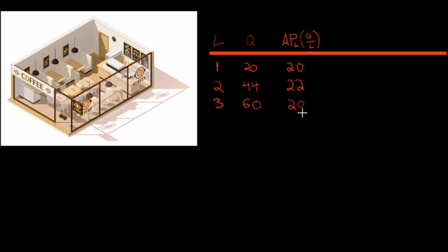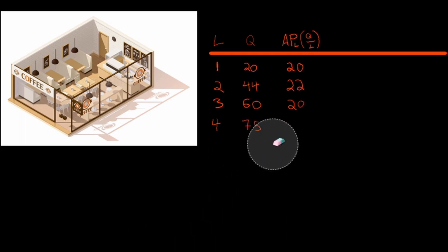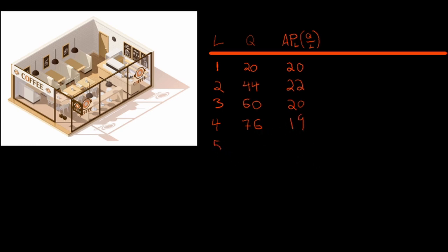Workers can only be productive if they have the espresso machine, cash register, or bakery display to work with — they can't just will espressos into being. Workers without a direct piece of capital to use have to wait. Output still increased, but average output has started to fall. We add a fourth worker, output goes to 76, average drops to 19. A fifth worker brings us to 90 cups, average 18.